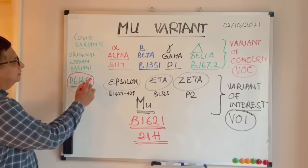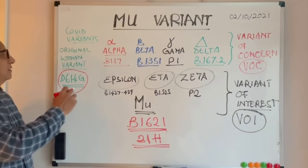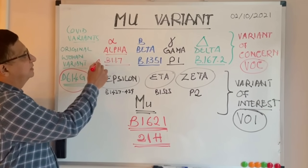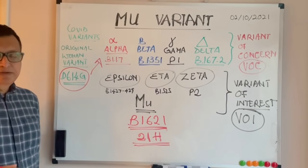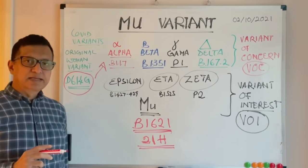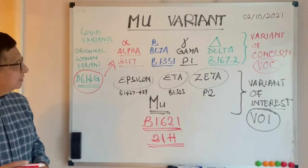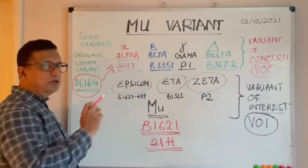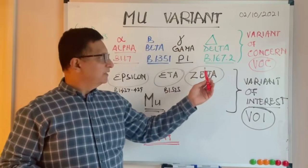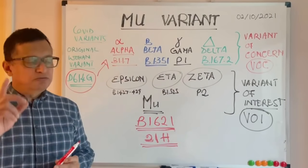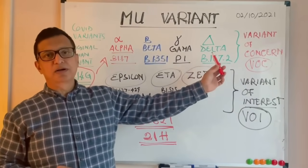Initially we had the Wuhan variant, known as the wild variant, designated D614G. Over time it mutated into various variants. We then came across the Alpha variant found in Kent, England — B.1.1.7 — then the Beta variant from South Africa, B.1.351, the Gamma variant P.1 from Brazil, and the Delta variant from India, B.1.617.2.